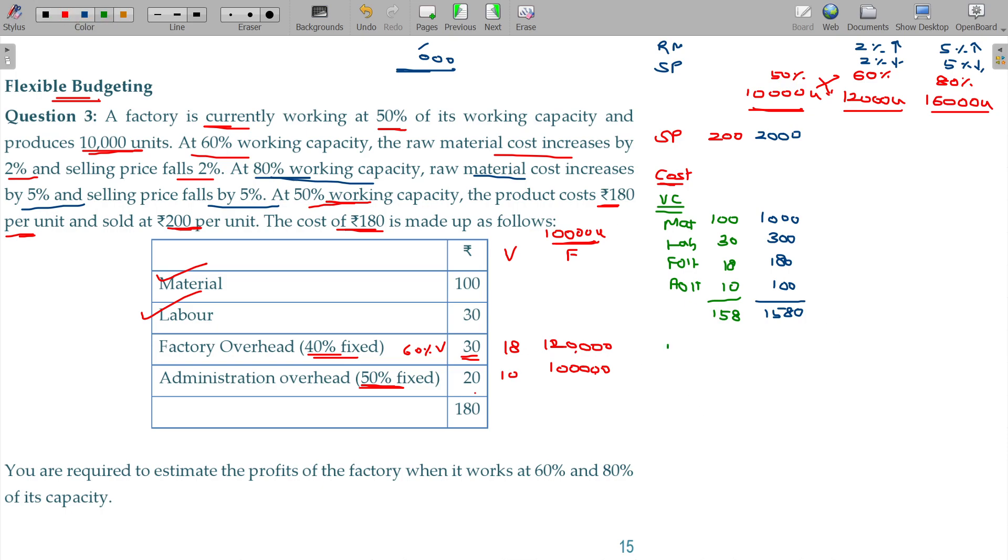Fixed cost. We have total cost per unit basis, we have factory overhead as well as admin overhead. 120,000, 100,000, then total cost being 1,800,000.